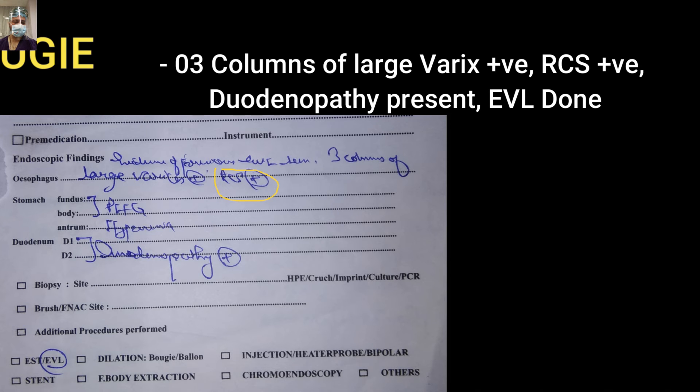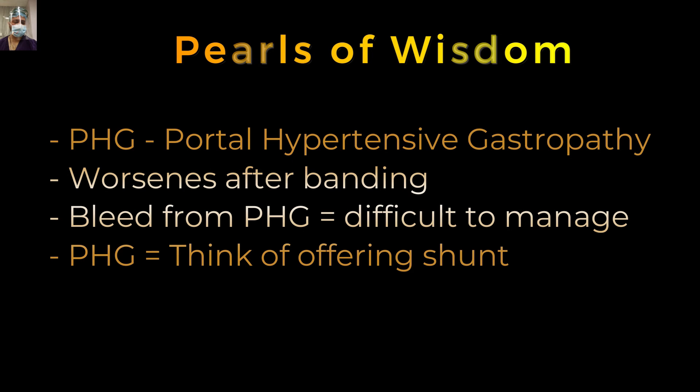Portal hypertensive gastropathy (PHG) involves abnormal enlarged channels in the peri-esophageal area — more or less equivalent to esophageal varices. When you apply a band on esophageal varices, these are the abnormal collaterals shunting blood from the liver to the systemic circulation. Occluding one column makes another channel more prominent, so varices worsen after banding. Bleeds from portal hypertensive gastropathy are very difficult to manage endoscopically and are one of the indications for shunt surgery.